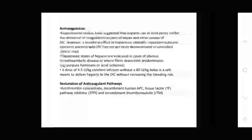Anticoagulation: experimental studies suggest heparin can inhibit activation of coagulation in cases of sepsis or other forms of DIC. However, the beneficial effect of heparin on clinically important outcomes in patients with DIC has not yet been demonstrated in controlled clinical trials. Therapeutic doses of heparin are indicated for venous thrombosis, disease with fibrin deposition, purpura fulminans. A dose of 4-5 units per kilogram continuously without increasing bleeding risk.